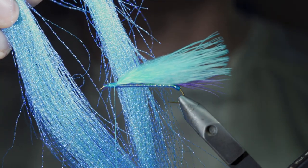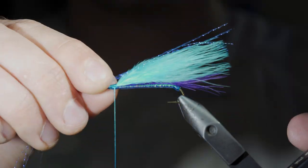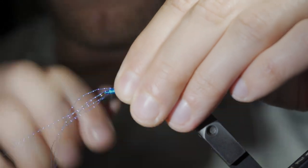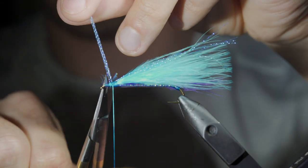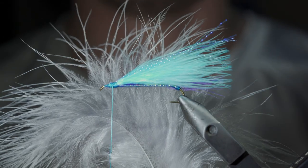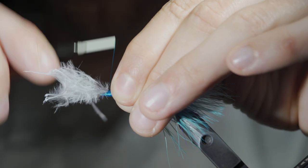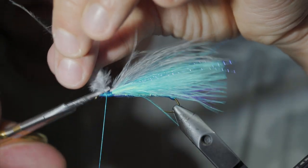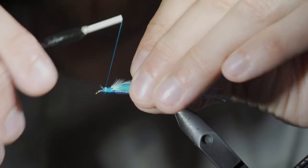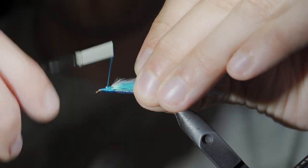We'll then grab some UV blue crystal flash, securing it to the top side of our fly. Secure tightly. Snip the excess free and grab some more marabou. This time we'll use gray, securing it once again to the top of our fly. Snipping the excess free and covering up the tag ends. Making sure to use as little thread as possible.